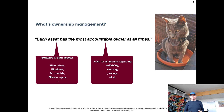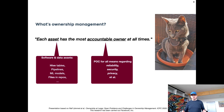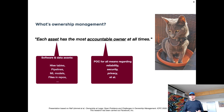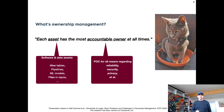The owner — which could be a person or a team — should be thought of as a point of contact for all kinds of aspects, such as reliability issues, security or privacy issues. That owner should be the point of contact. Ownership management is about establishing and maintaining a situation where each asset has the most accountable owner at all times.